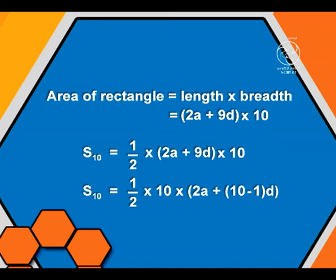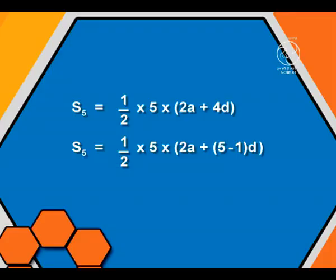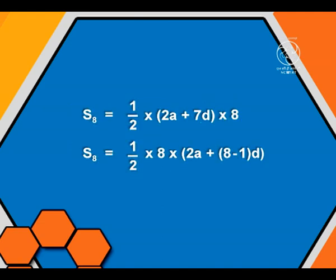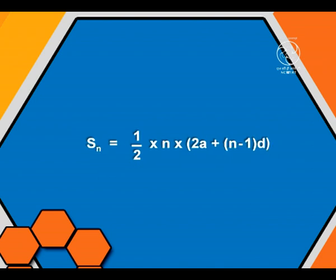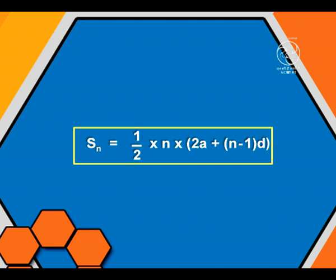Now observe carefully the three expressions which are obtained. We have S5 equal to half of 5 into (2A plus (5 minus 1) into D), S8 is equal to half of 8 into (2A plus (8 minus 1) into D), and S10 is equal to half of 10 into (2A plus (10 minus 1) into D). So what will be the sum of the first n terms of the arithmetic progression? The sum of first n terms is equal to n by 2 into (2A plus (n minus 1) into D). This is the formula for finding the sum of first n terms of the AP.